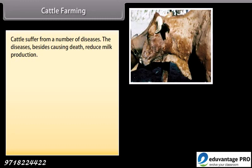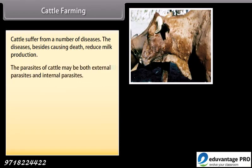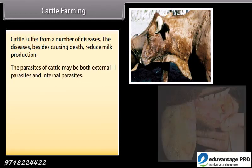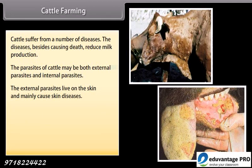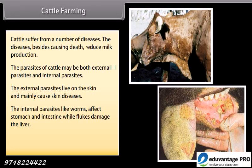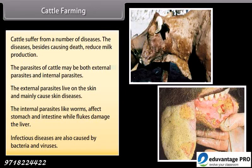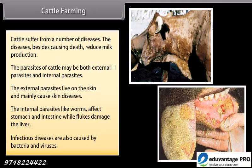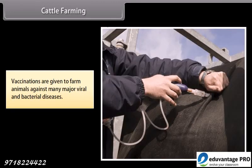Cattle suffer from a number of diseases. The diseases, besides causing death, reduce milk production. The parasites of cattle may be both external and internal. External parasites live on the skin and mainly cause skin diseases. Internal parasites like worms affect the stomach and intestine, while flukes damage the liver. Infectious diseases are also caused by bacteria and viruses. Vaccinations are given to farm animals against many major viral and bacterial diseases.